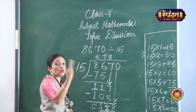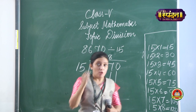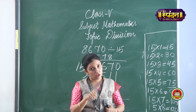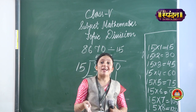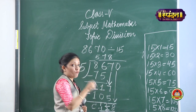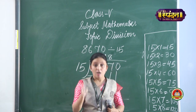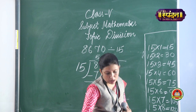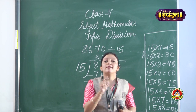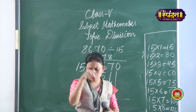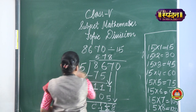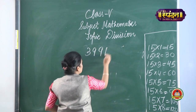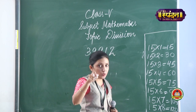Next I will take a number that also has a remainder, and there I will explain the terms: divisor, dividend, and remainder. Let us take another example from your book — a 5-digit number: 39912 divided by 64.